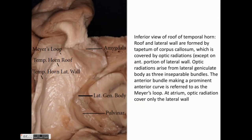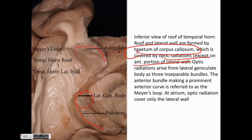In the inferior view of the roof of the temporal horn, the roof and lateral walls are formed by the tapetum of the corpus callosum, covered by the optic radiation except on the anterior portion of the lateral wall. We can see the lateral geniculate body, the pulvinar of the thalamus, and the amygdala forming the anterior wall of the temporal horn. Meyer's loop is visible superiorly and is susceptible to damage on the anterior portion of the lateral wall. At the atrium, the optic radiation covers only the lateral wall.